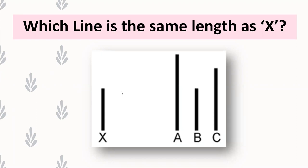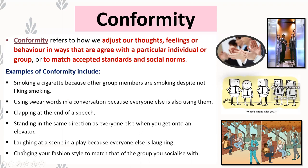I'm pretty sure most of you said that the line that was the same as X was B, which is correct. None of you would have said A or C, hopefully. The study we're looking at today talks about how a person shown this same question was actually pressured to choose the wrong answer — A or C — because the rest of the people in the room said the answer was A or C. So he felt like he had to say the same thing as them. That concept of adjusting what we think to match what other people think is called conformity.